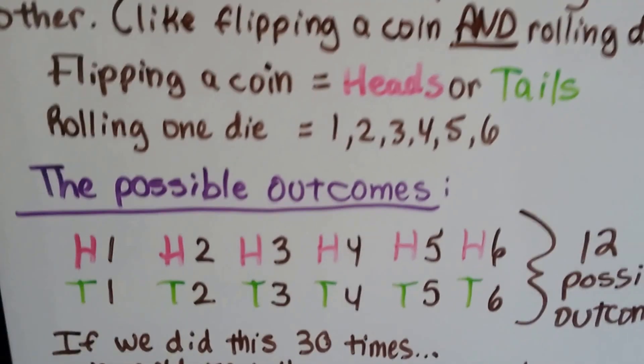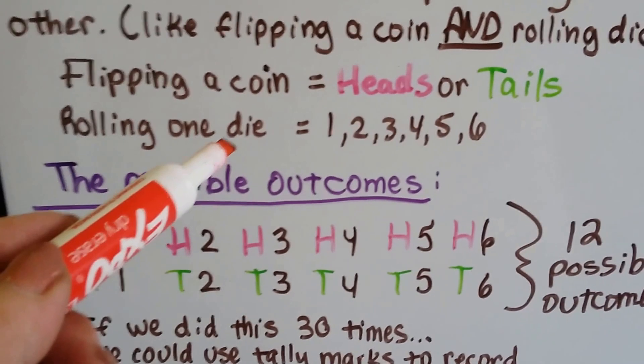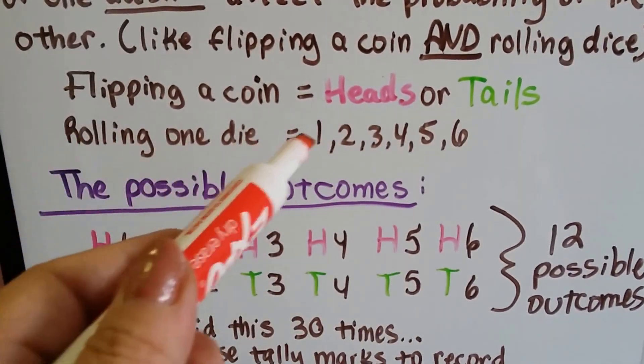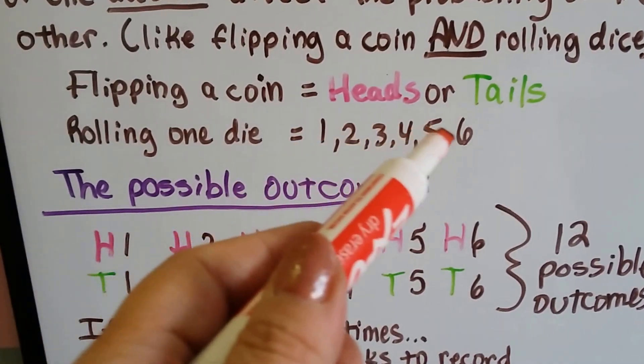So let's say we were going to flip a coin and roll one die. If we flip a coin, we're going to get heads or tails. If we roll one die, we're going to get a 1, 2, 3, 4, 5, or 6.